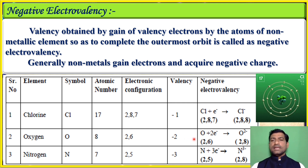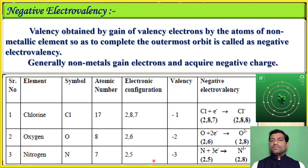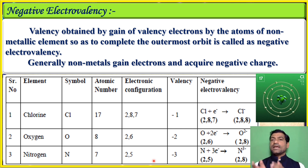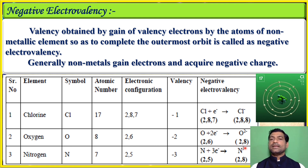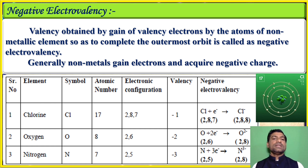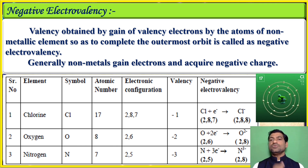The second example for negative electrovalency is oxygen. The atomic number of oxygen is eight, and the electronic configuration is 2, 6 — two electrons in the first orbit and six in the second. Oxygen requires two electrons to complete the outermost orbit and becomes stable when it accepts those two electrons from another atom. Its configuration then becomes 2, 8 and it acquires a negative charge.